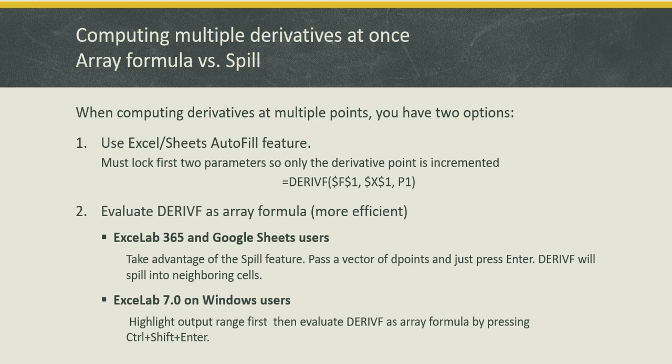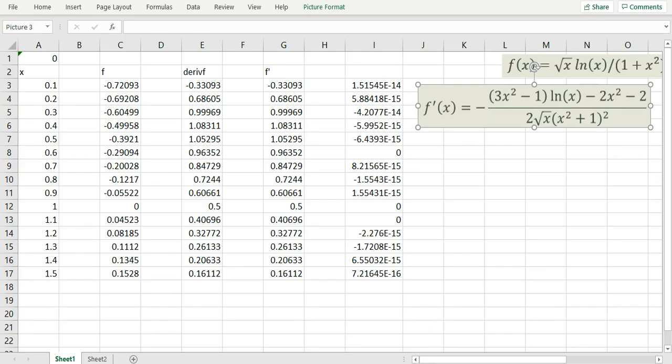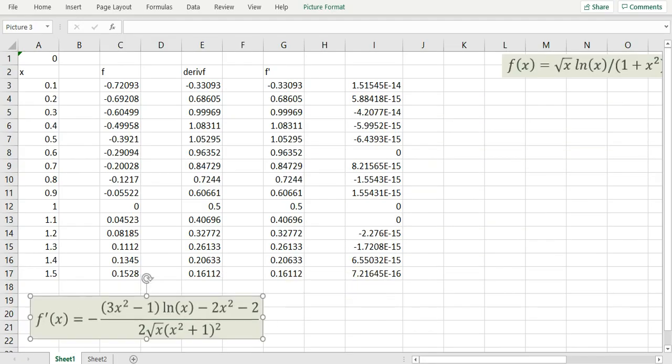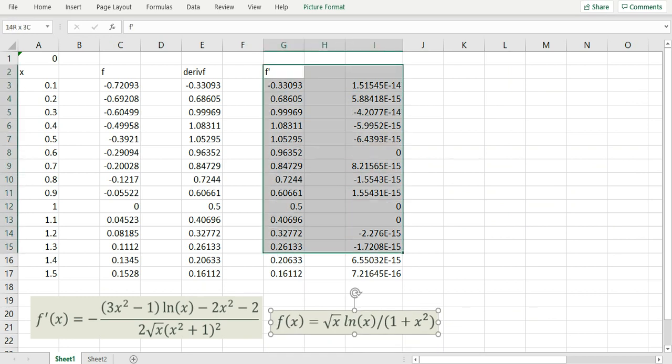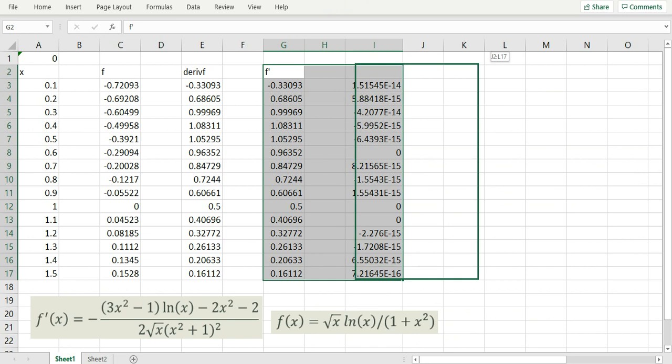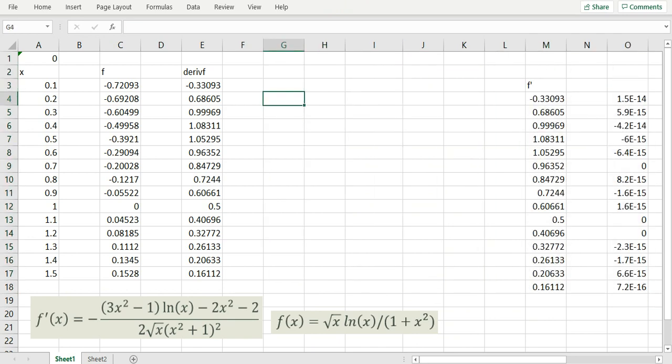So let me show you how you would actually do the proper array formula if you are working with Windows version. Going back to my Excel, I'm going to move this to make some room here and move both of these columns away. Using the spell feature, my formula is simply a standard formula but my points here are a vector and all I have to do is click Enter and Excel automatically expands my result.